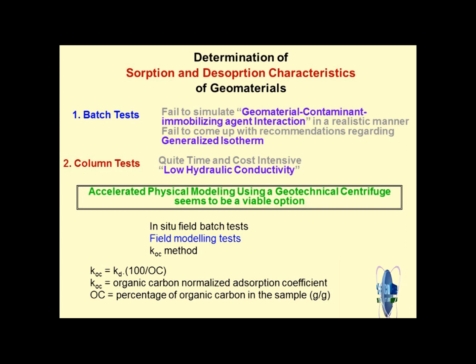Whatever happens in the field is quite close to the column test, but because of small sample size, heterogeneity effects, and possible preferential flow between the sample and inner walls of the container — similar to problems in hydraulic conductivity measurement — both tests have their own limitations and strengths. As an engineer, you have to rely on something. Better solution: get results from both batch and column tests and compromise, then select parameters.